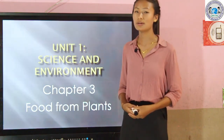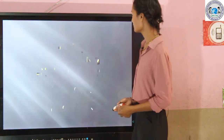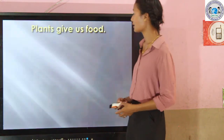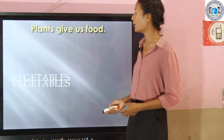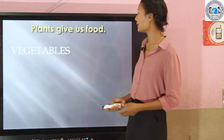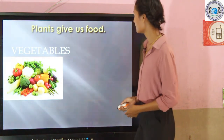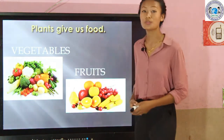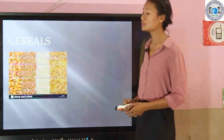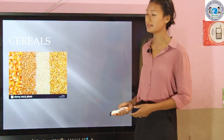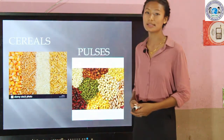Now we are going to learn about food from plants in Chapter 3. Let's start our chapter. Plants give us food — plants give us vegetables, fruits, cereals, and pulses.